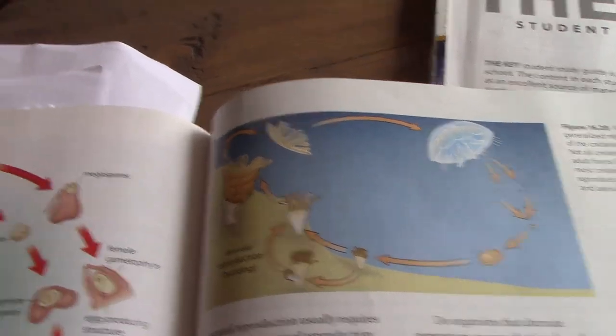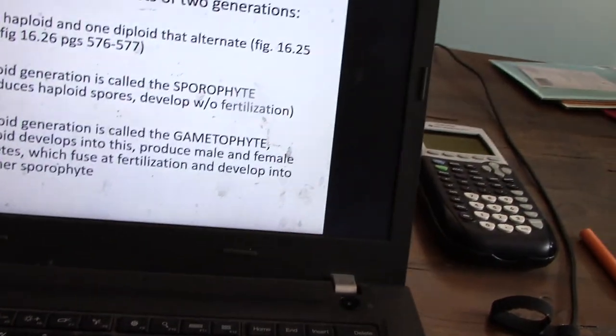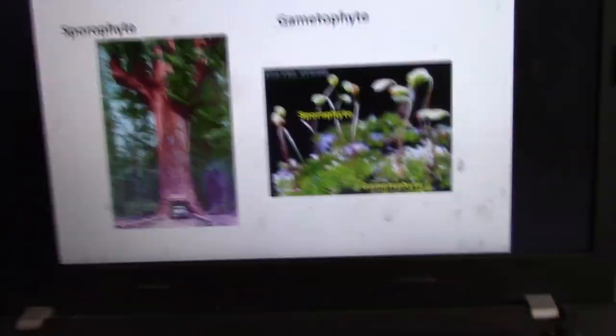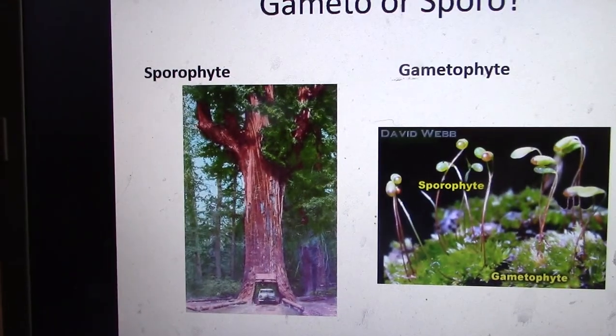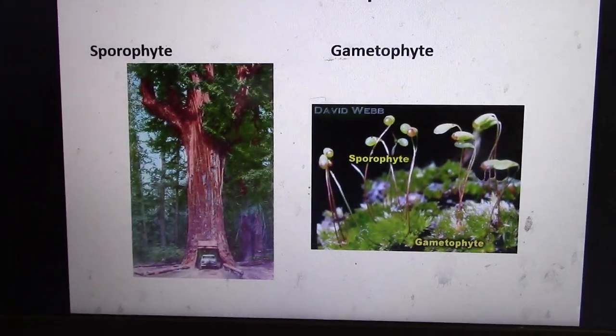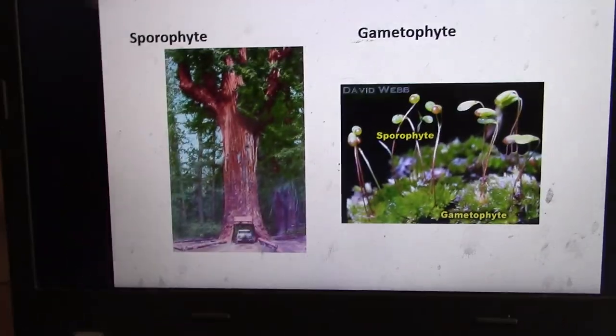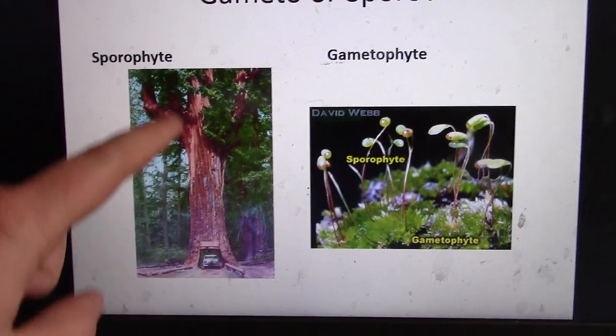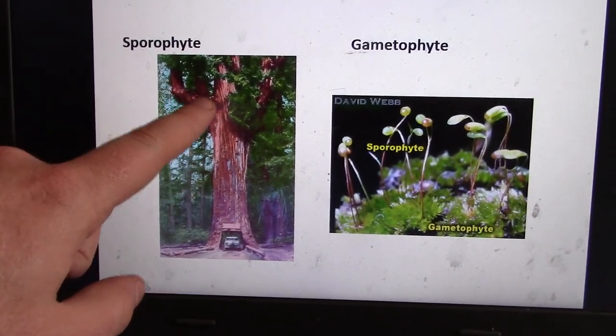This is figure 16.28. There is a haploid and a diploid lifeform. Here's the gist of what happens with alternation of generations. I'm going to show these diagrams here really quickly. So in plants, here's a gametophyte. This is a sporophyte, diploid organism.